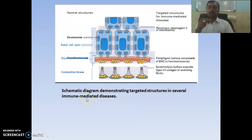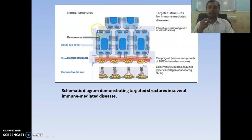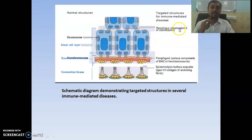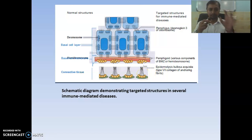Then come the immune-mediated diseases. In this diagram you can see all the immune-mediated diseases: pemphigus, pemphigoid, and epidermolysis bullosa. Remember cells are connected to each other with the help of desmosomes, and basal cell layers are connected to the basement membrane with hemidesmosomes, which are connected to connective tissue via anchoring fibres containing type 7 collagen. In pemphigus the targeted tissue is Desmoglein-3 of desmosomes; in pemphigoid it is the basement membrane or hemidesmosomes; and in epidermolysis bullosa it is type 7 collagen of anchoring fibres.